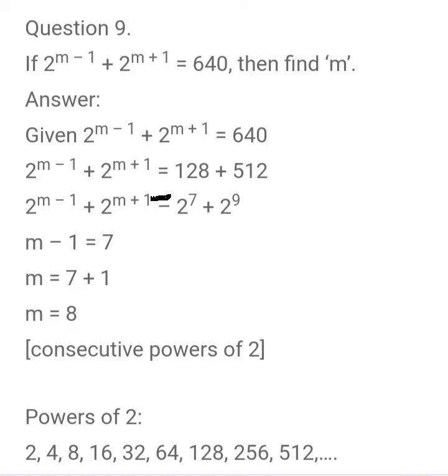Given that 2 power m minus 1 plus 2 power m plus 1 equals 640. We are splitting 640 into 2 terms because the RHS has 2 terms. So 640 is rewritten as 128 plus 512.